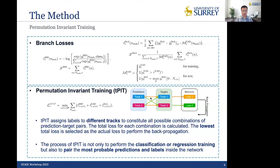And for these two combinations, we can obtain two losses. And we'll take the minimum of these losses to perform the back propagation. So the process of TPIT is not only to perform the classification or regression training, but also to pair the most probable predictions and labels inside the network.